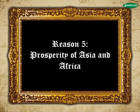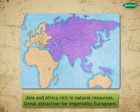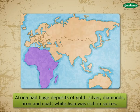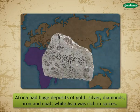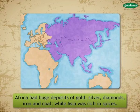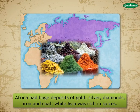Reason 5 — Prosperity of Asia and Africa: The Asian and African continents were very rich in natural resources, which were a great attraction for the imperialist European nations. Africa had huge deposits of gold, silver, diamonds, iron, and coal, while Asia was rich in spices.